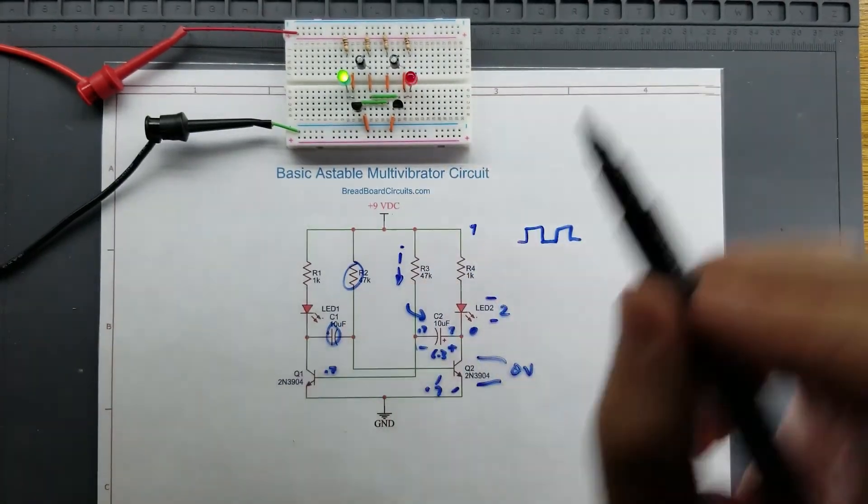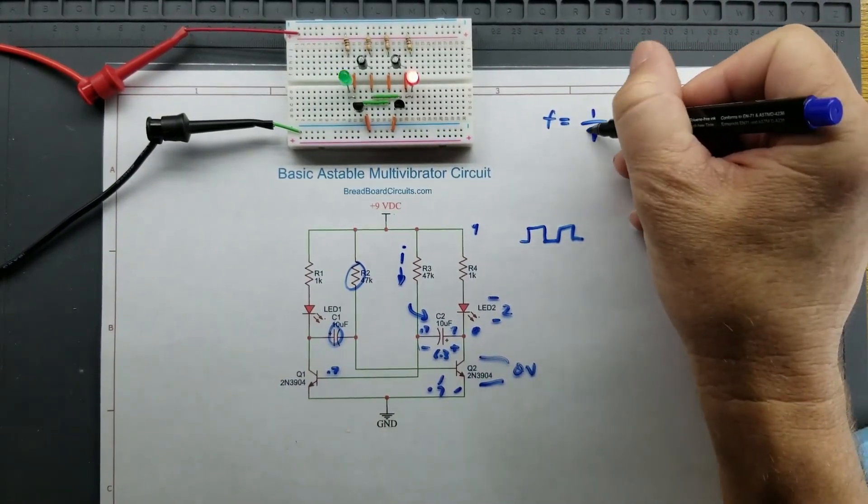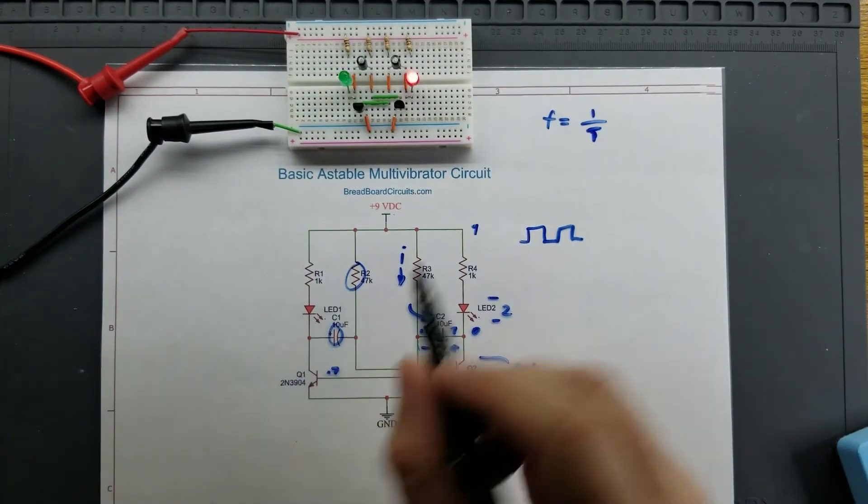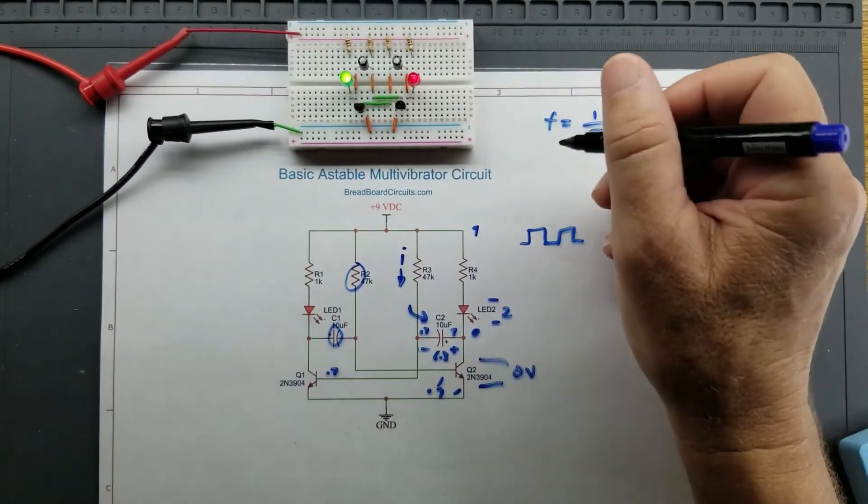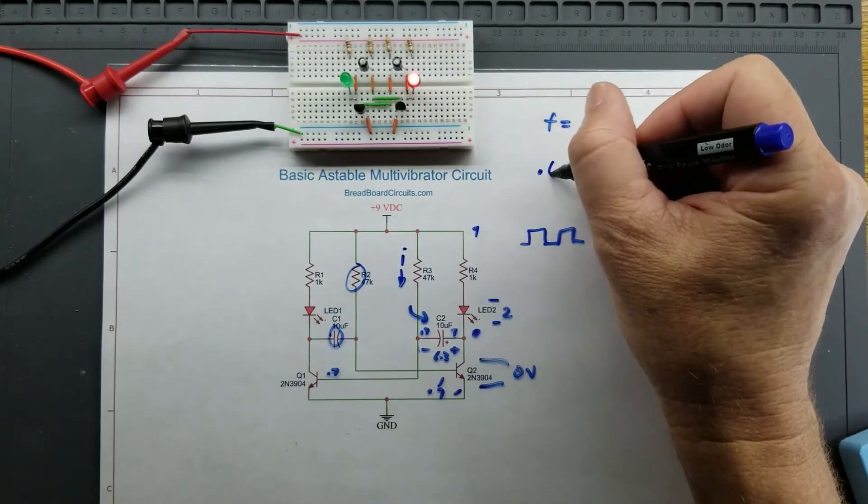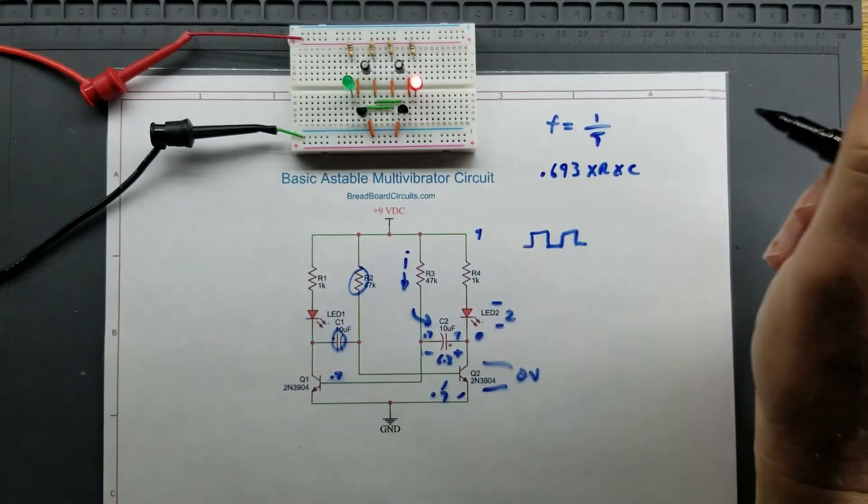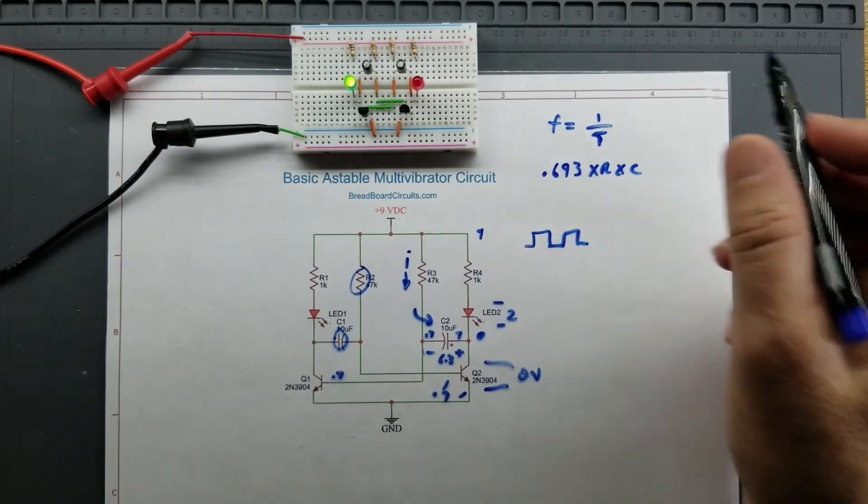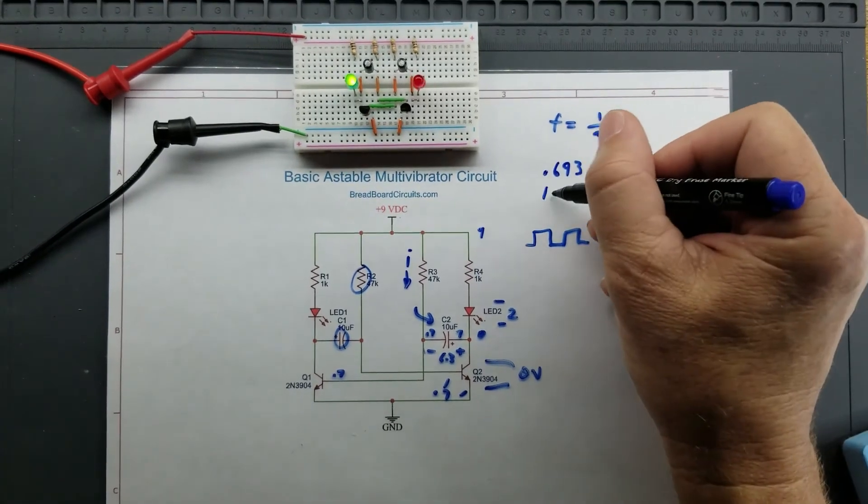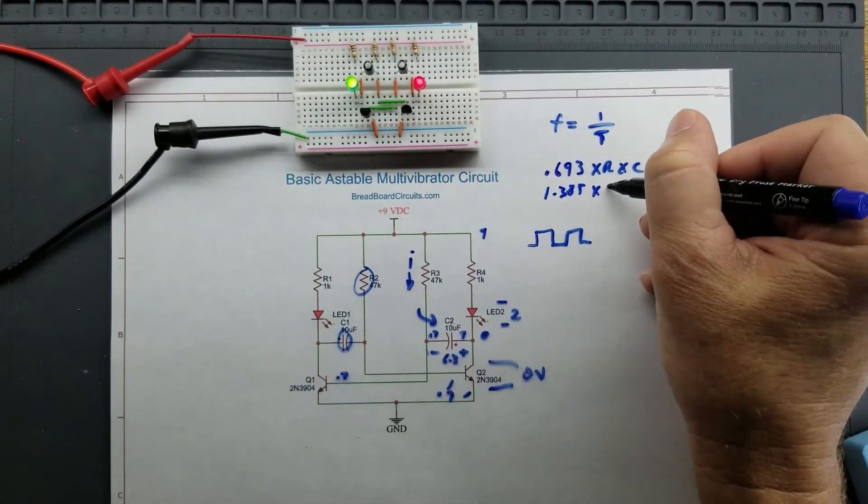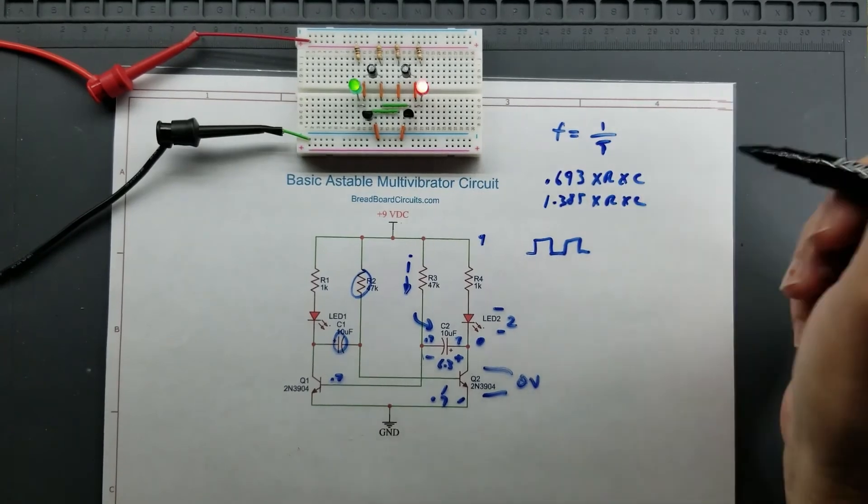The time it takes for each transistor to turn on is based on this RC time constant. And that time defines one half of the time period because the frequency is equal one over the time period. But this is one half of the time period, each of these is one half of the time period. Each time period, the time it takes to turn each transistor on is 0.693 times R times C. A full time period, since this is one half of the time period, a full time period would be 1.385 times R times C. That's going to be your time period. Your frequency is going to be the reciprocal of this.